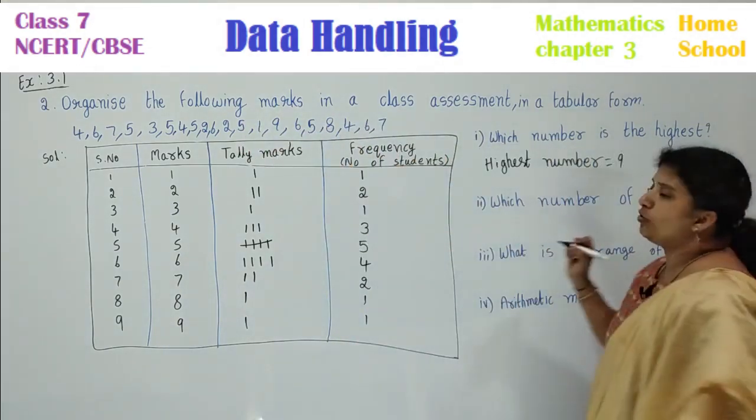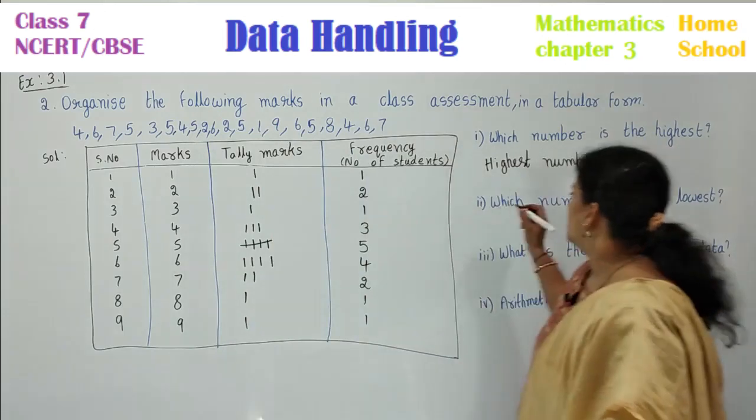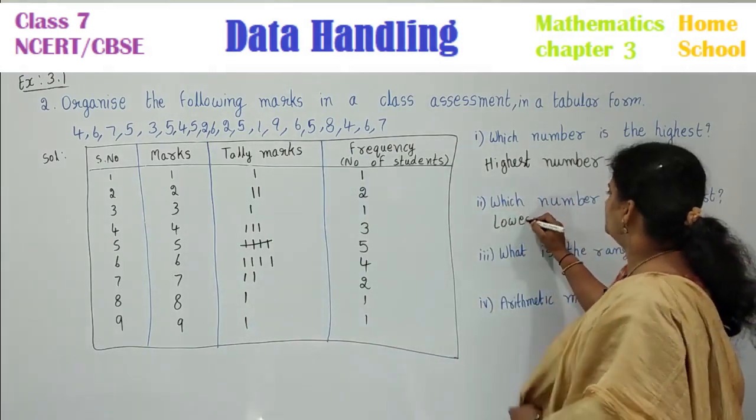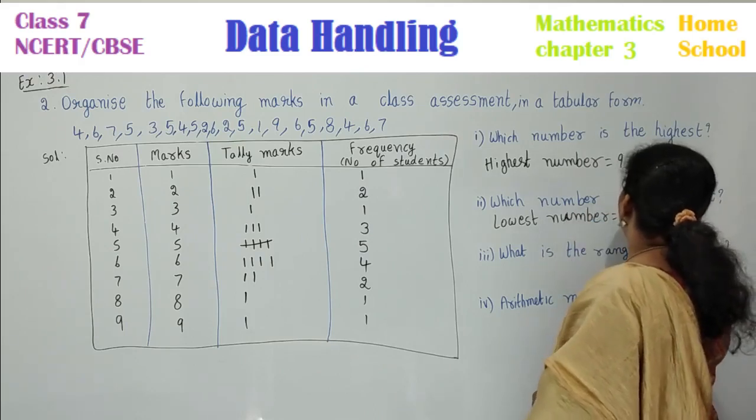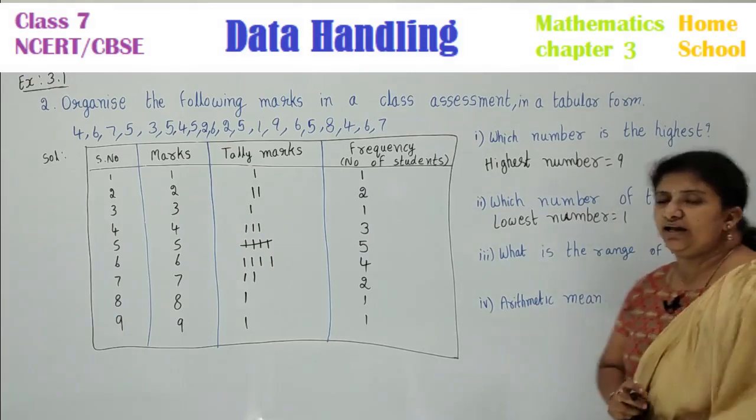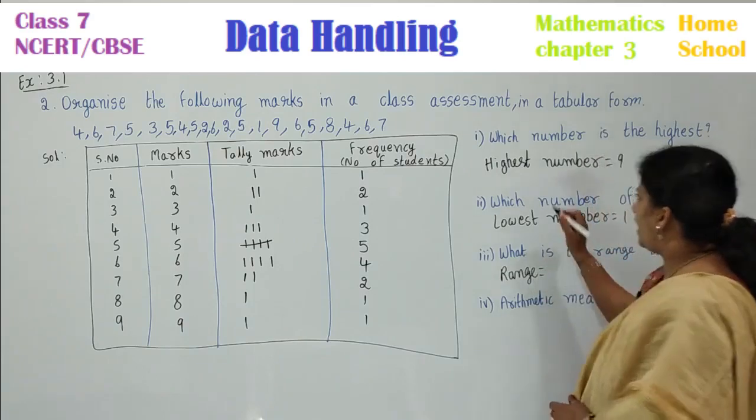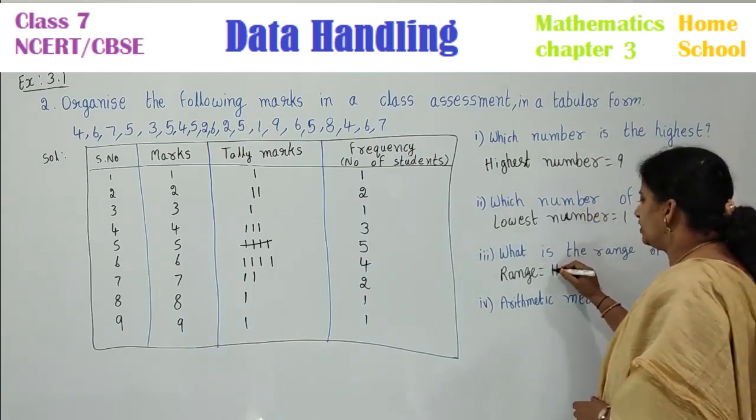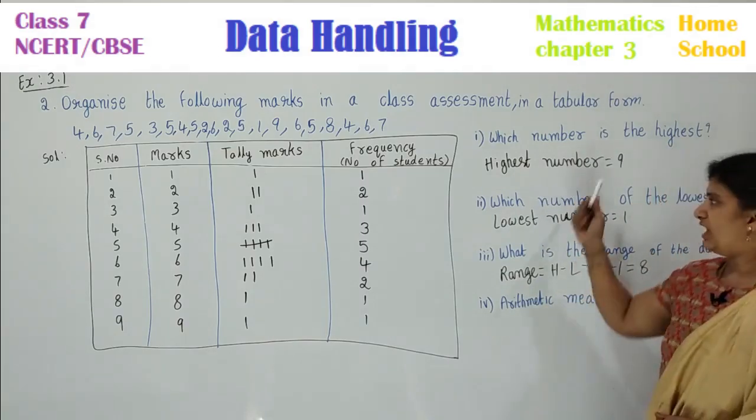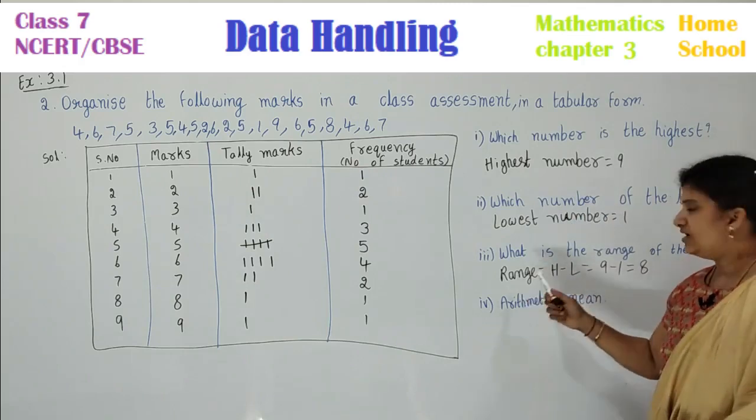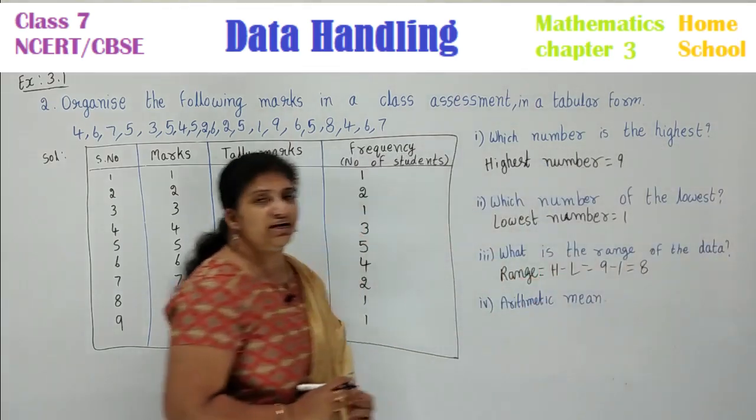Which number is the lowest? Lowest number is equal to 1. What is the range of the data? Range formula: highest score minus lowest score, H minus L, that is 9 minus 1 equals 8. Range is equal to 8. And your last question is arithmetic mean. What is arithmetic mean? Arithmetic mean means it is the average.